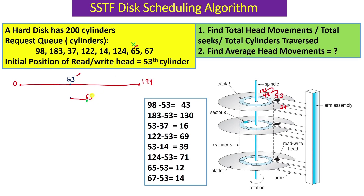Now from position 65, I want to find the closer cylinder number. I subtract 65 from each remaining request: 98 minus 65 = 33, 183 minus 65 = 118, 65 minus 37 = 28, and so on. The difference between 65 and 67 is only 2, which is the minimum. So I move from 65 to 67.